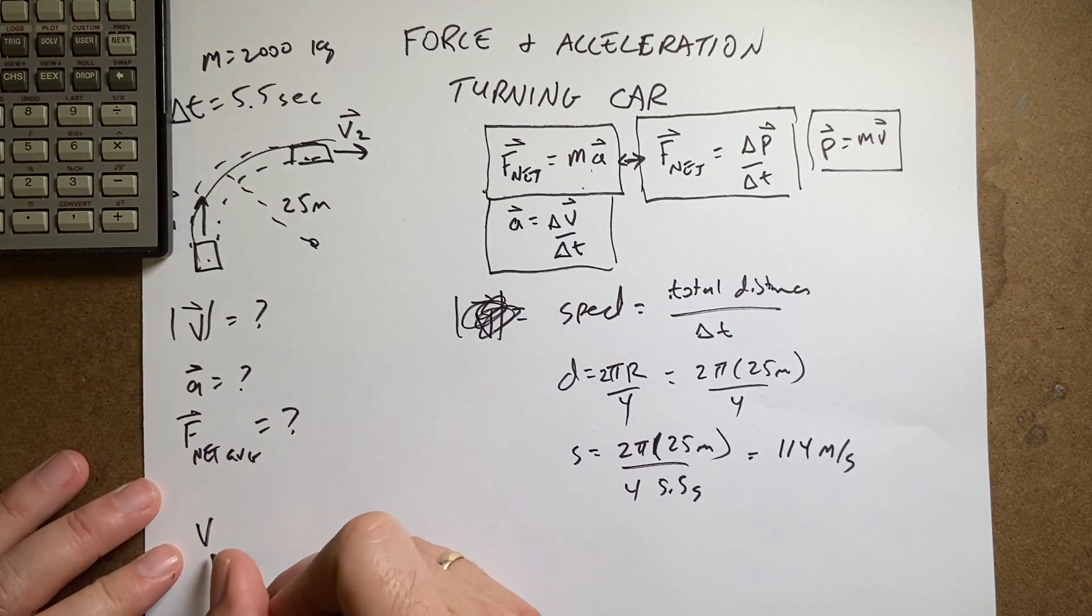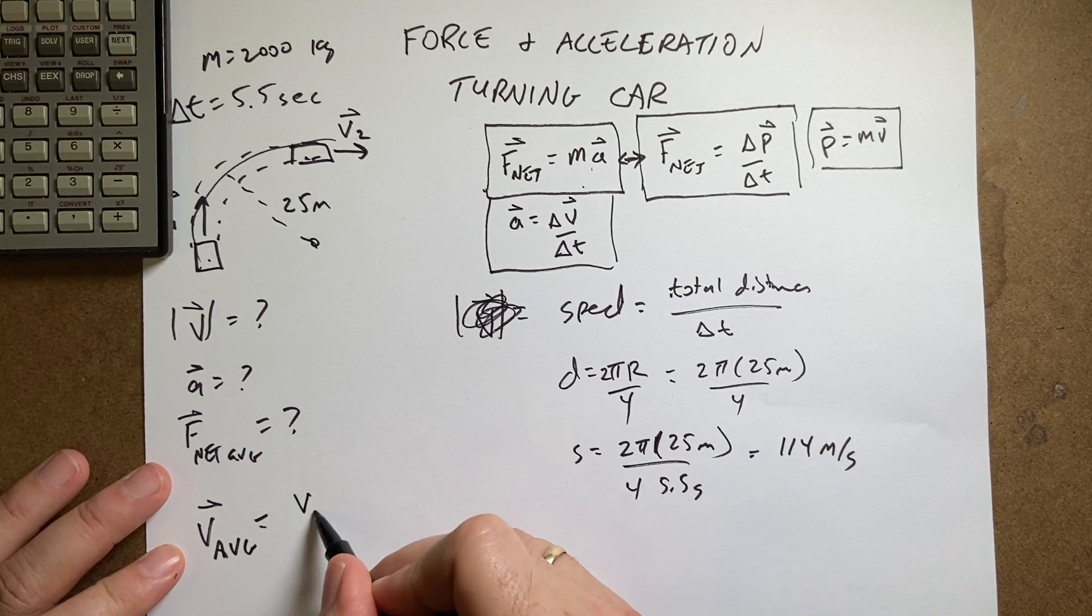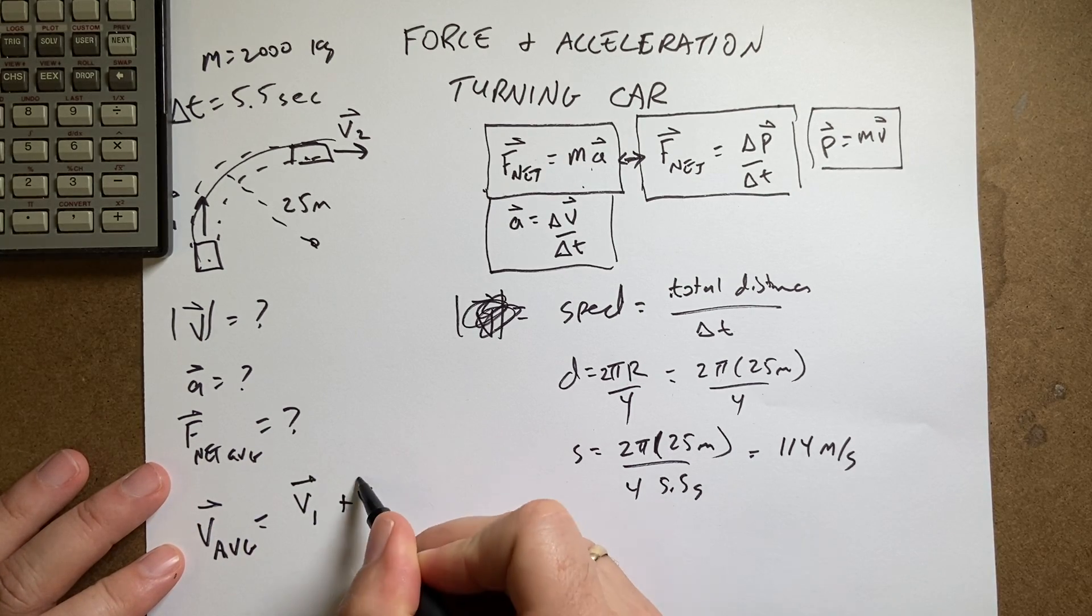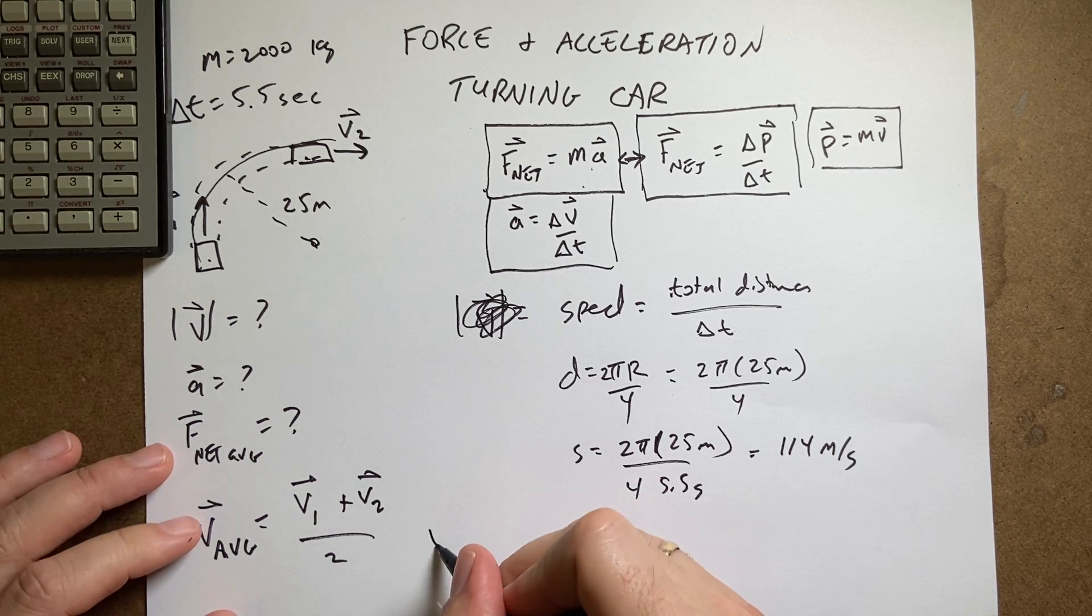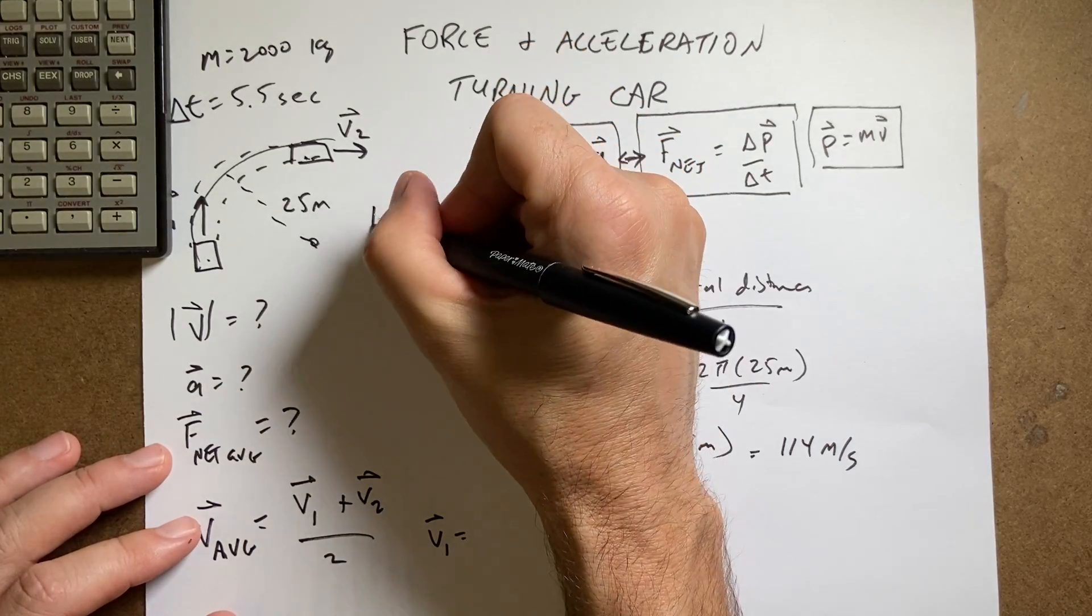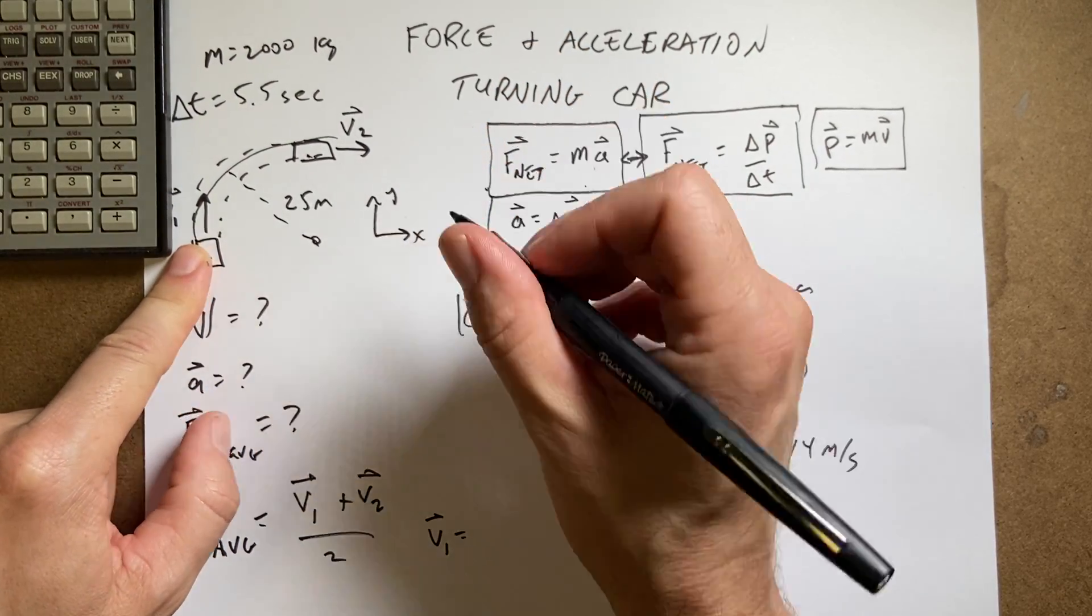Now let's calculate the average velocity. V average is going to be equal to V1 plus V2 over 2. But in order to do that, I need to get V1 and V2 as vectors. So let's write V1 and let's call this the X and the Y axis. V1 is moving in the Y direction.